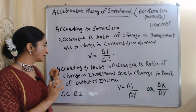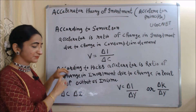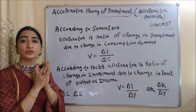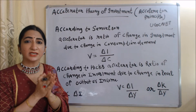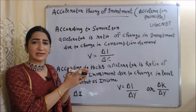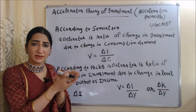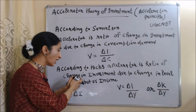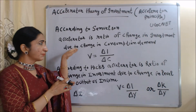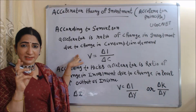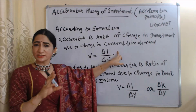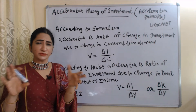According to Hicks, the accelerator is the ratio of change in investment due to change in income or output. Hicks' accelerator mainly tells us how much investment changes due to change in output or income, whereas Samuelson's accelerator tells us how much investment changes due to change in consumption.